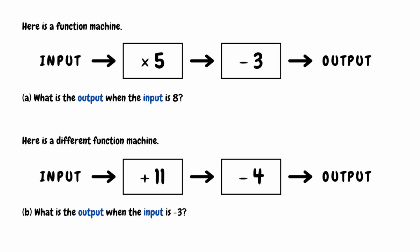For part A of this question, we need to figure out the output when the input is 8. I'm going to start by writing 8 by the input and then follow these operations. So I'd do 8 multiplied by 5, which gives me 40. We then do 40 take away 3, which gives us 37. So when our input is 8, our output is 37.